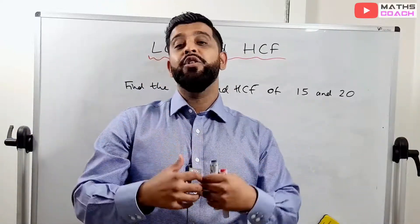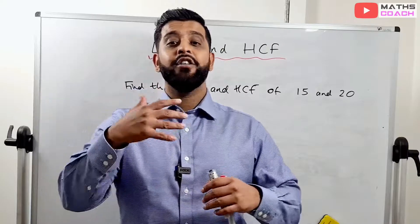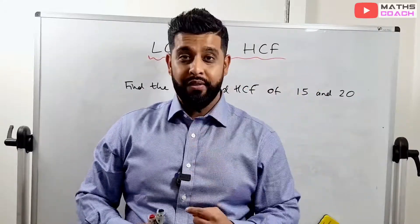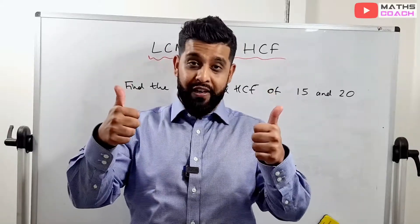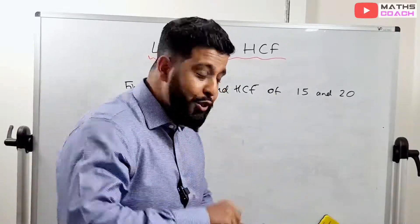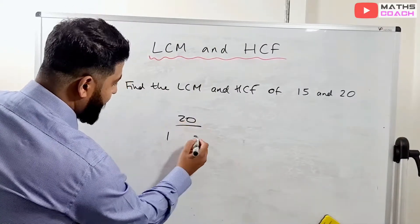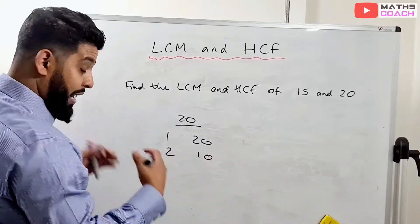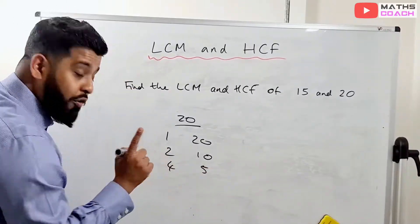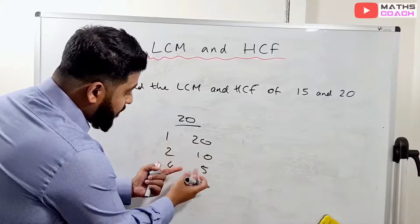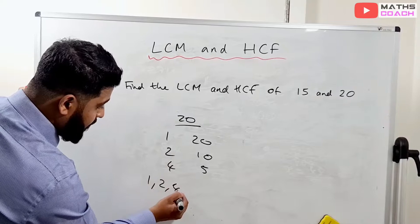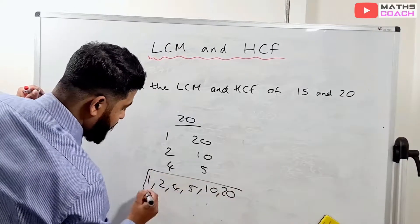Factors, on the other hand, are numbers that go into another number. For example, the factors of 20 are 1 and 20, 2 and 10. I like to do them in pairs. Does 3 go into 20? No. Does 4 go in? Yes — 4 and 5. The factors get closer together, and that's when you know you've found all of them. So the factors of 20 are 1, 2, 4, 5, 10, and 20.